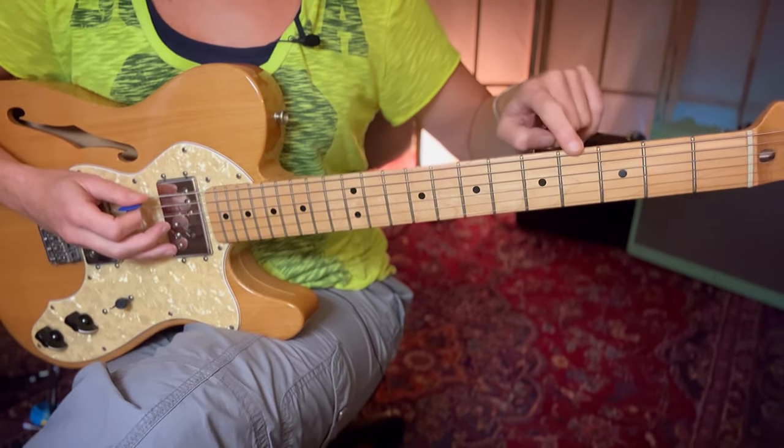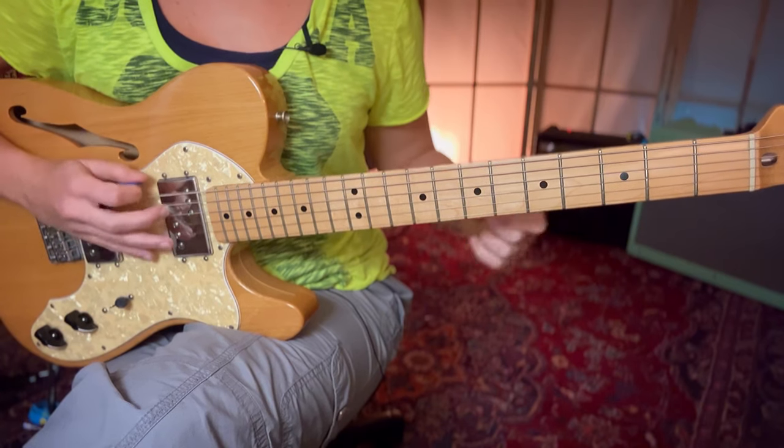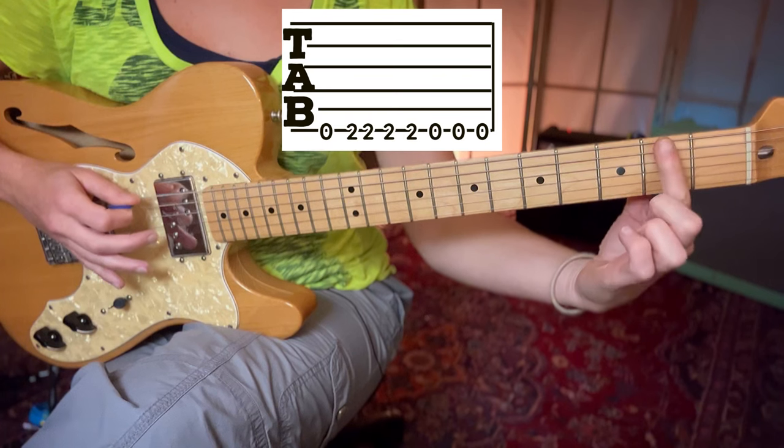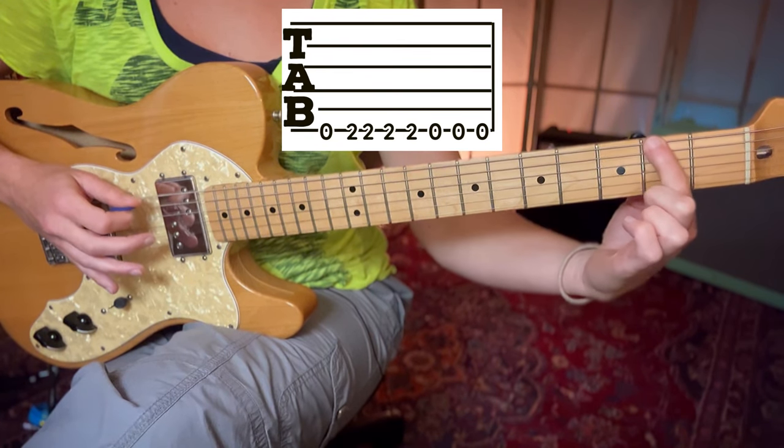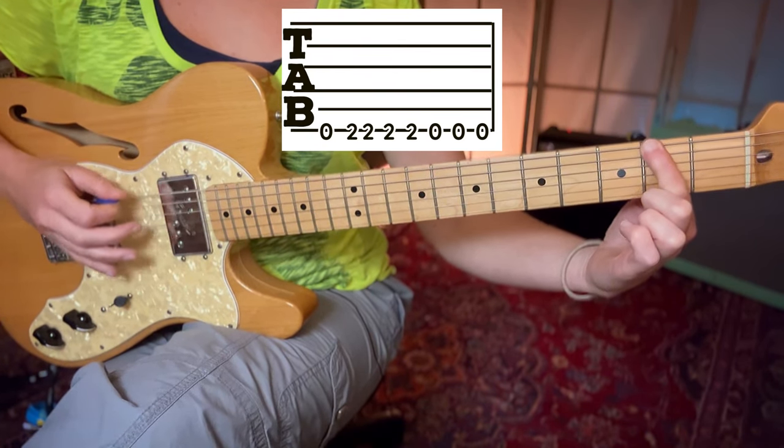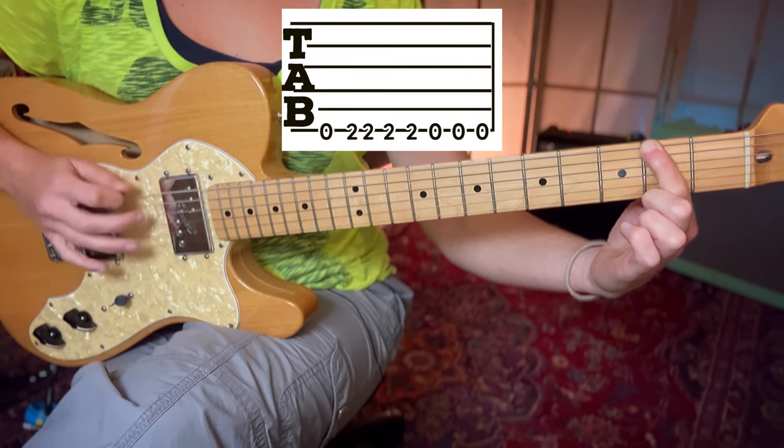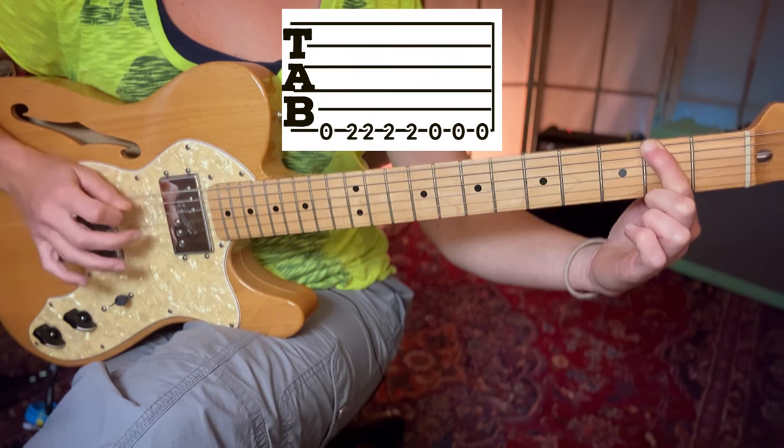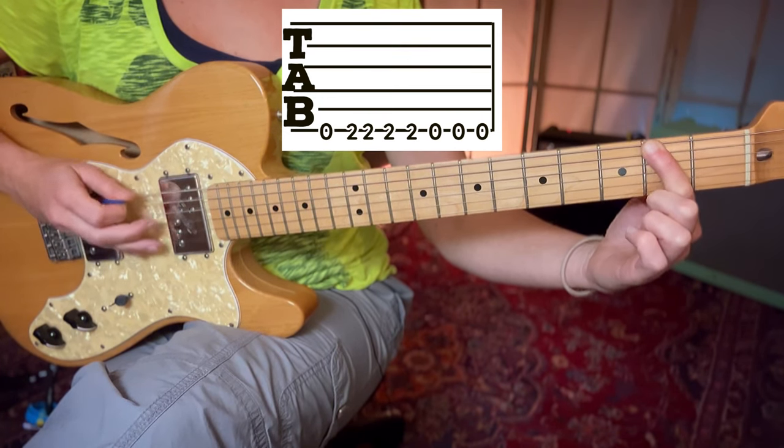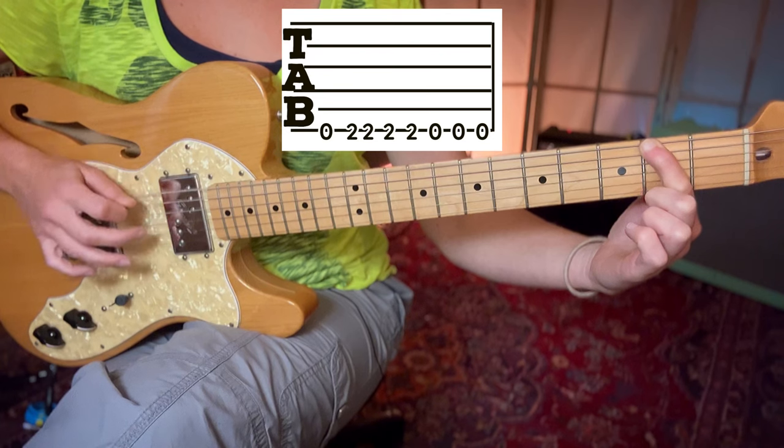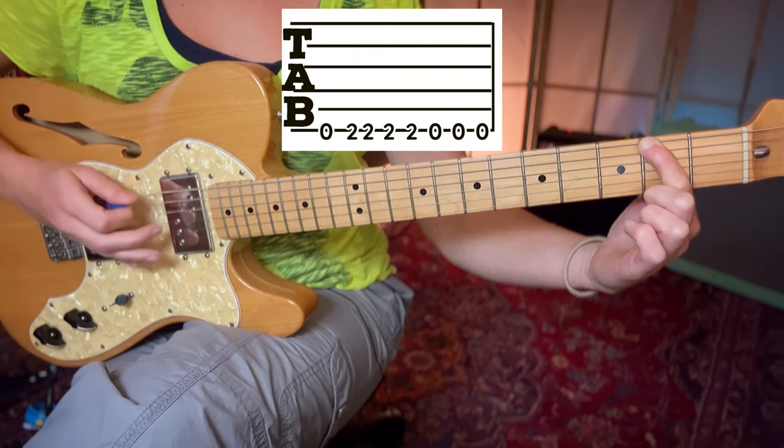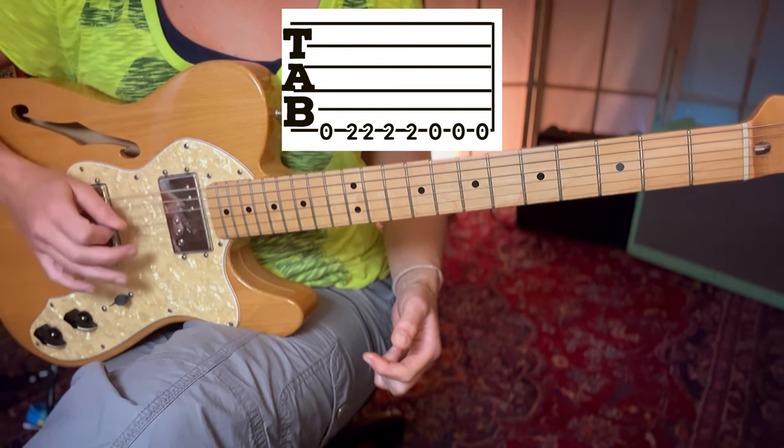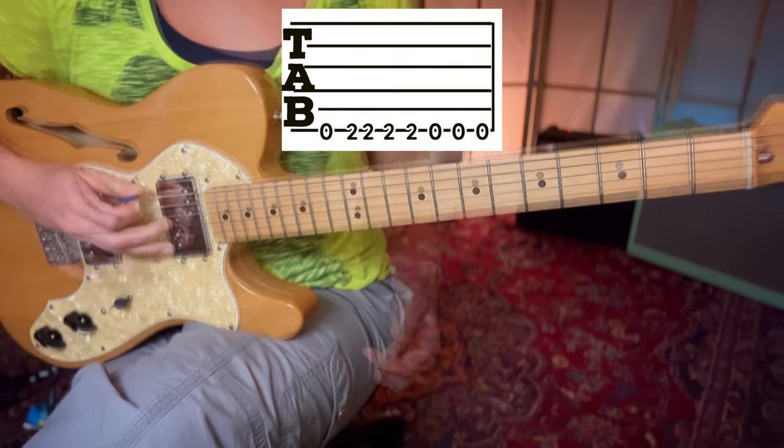This is all on the thick E string. We begin with one open down strum on the E. We play the second fret with our index finger and with the pick we do a down up down down, down up down down. We then play open open open all together.